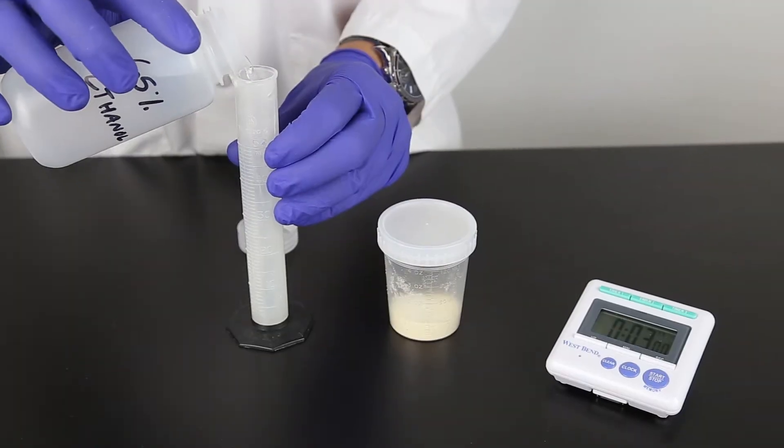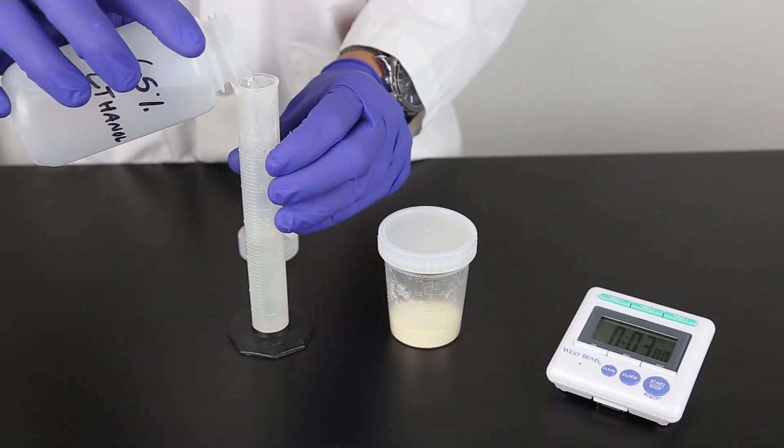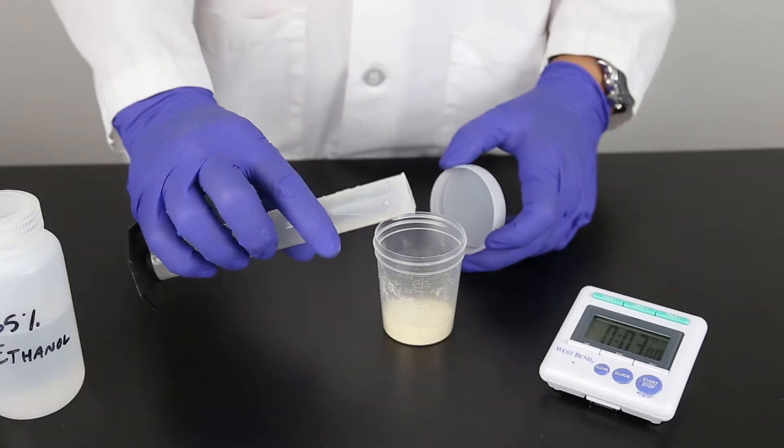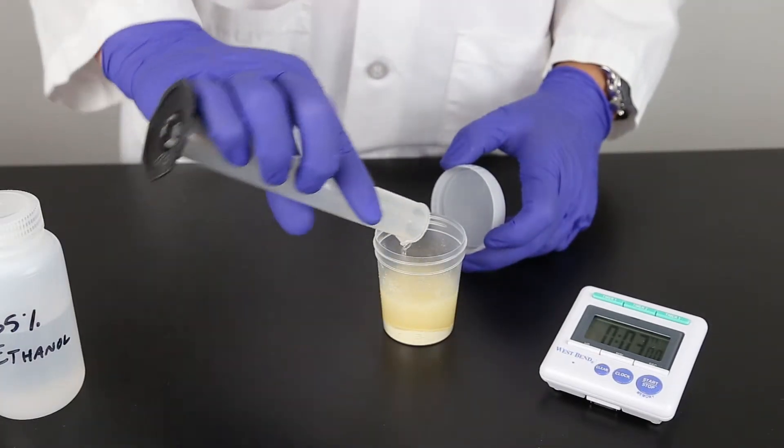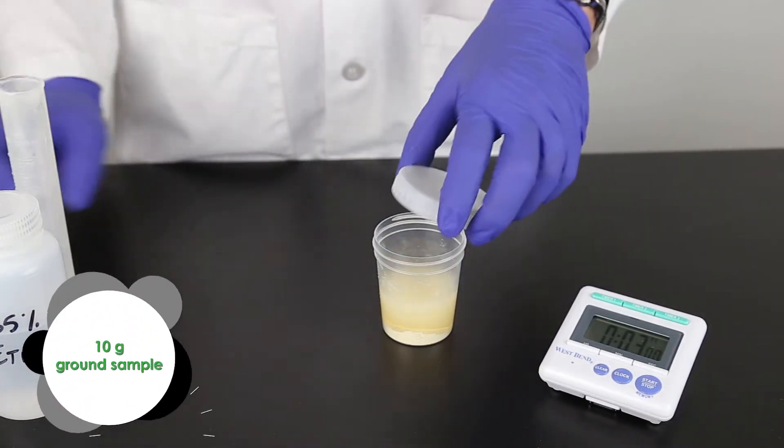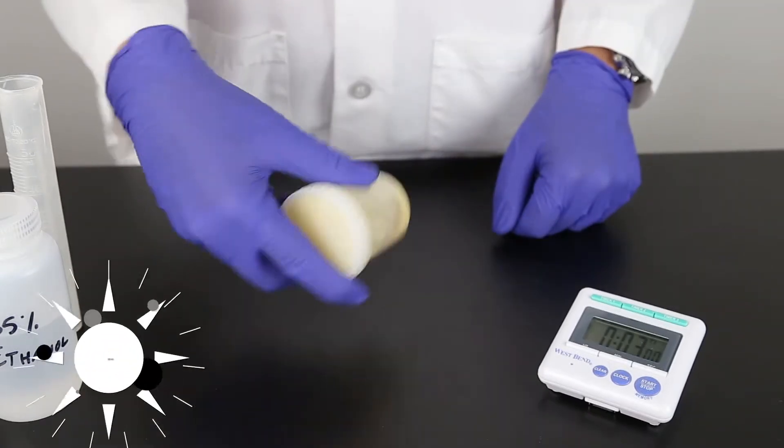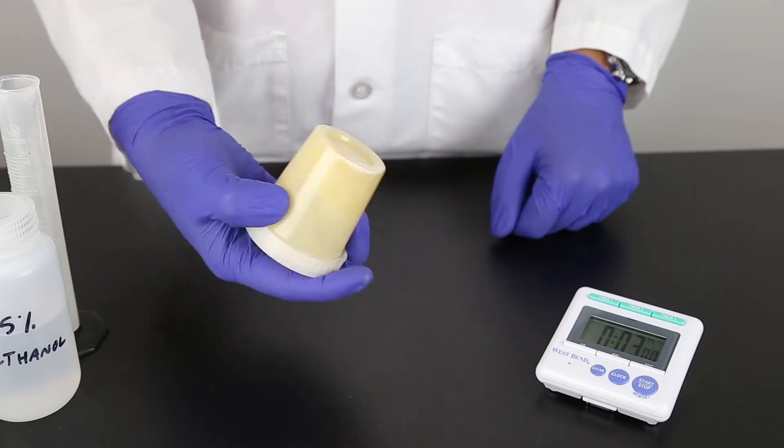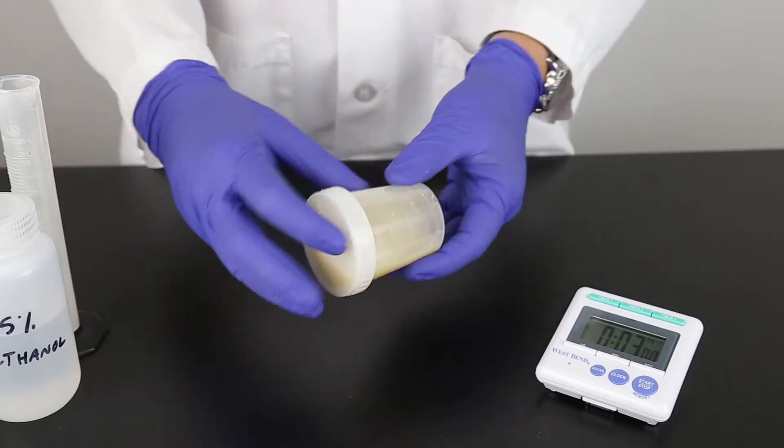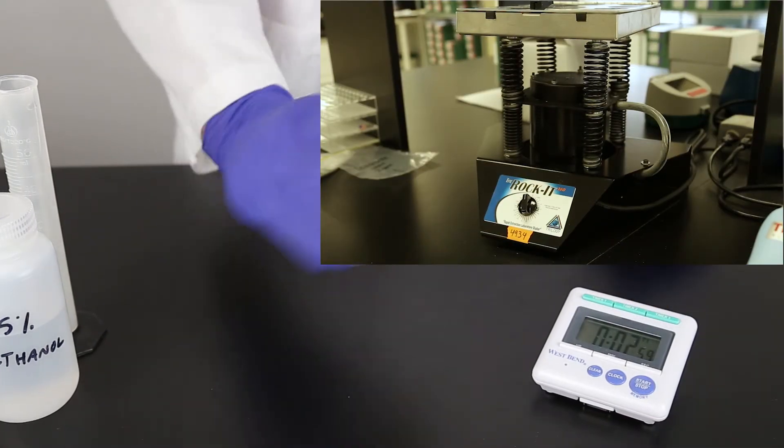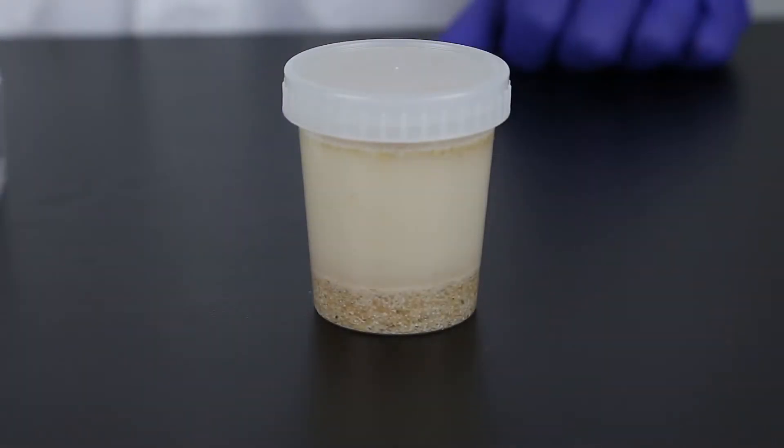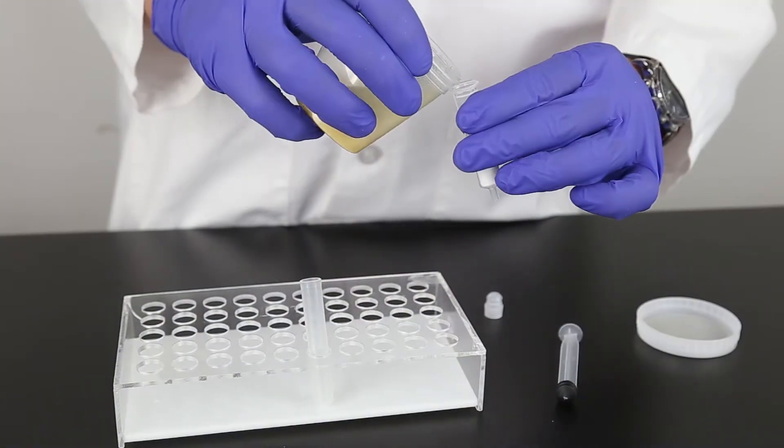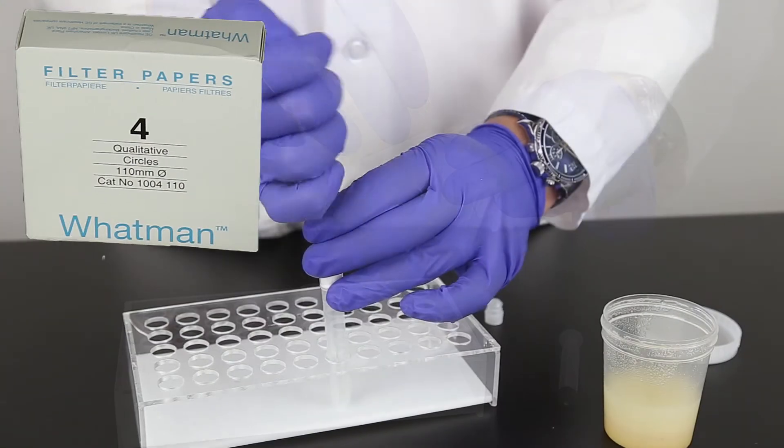The sample is extracted with a ratio of one part sample to five parts 65% ethanol. For this example, we're using 10 grams of ground sample with 50 milliliters of 65% ethanol. Vigorously shake for three minutes using hand or mechanical means. Allow sample to settle and filter with a filter syringe or Whatman No. 4 filter paper.